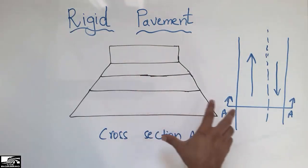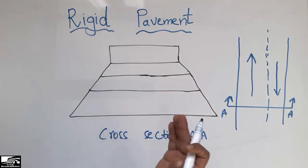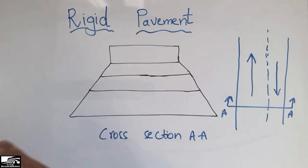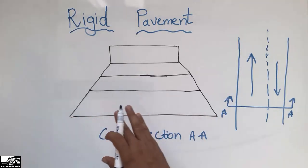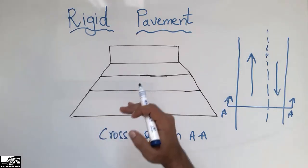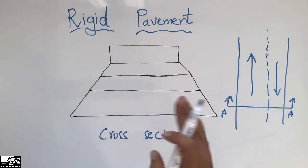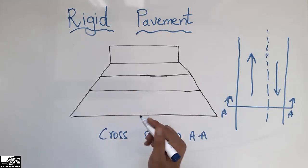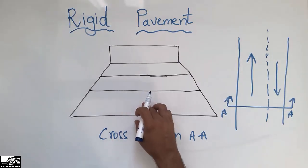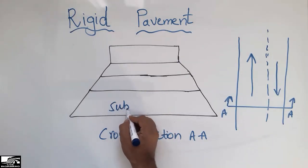The cross-section of the rigid pavement is similar to the flexible pavement in terms of load distribution — how the load transfers from one layer to another layer. However, in rigid pavement we have some different layers.